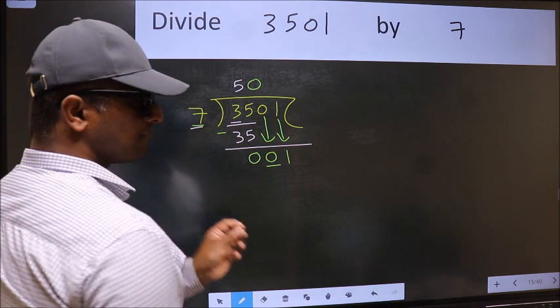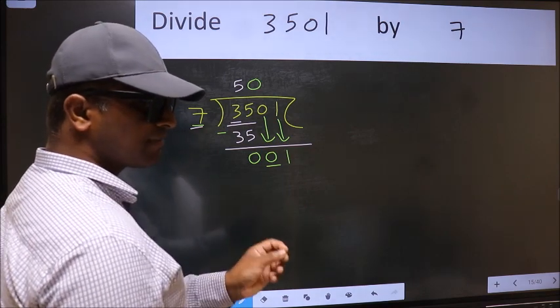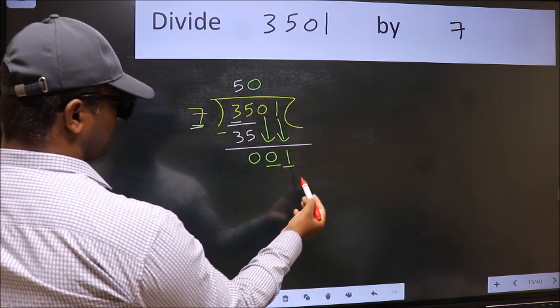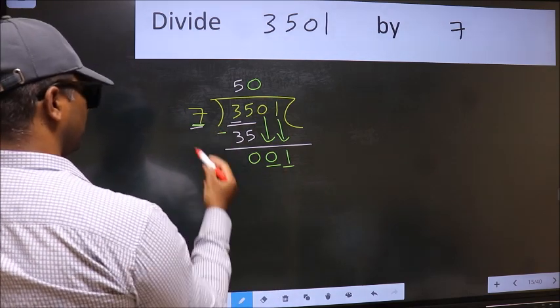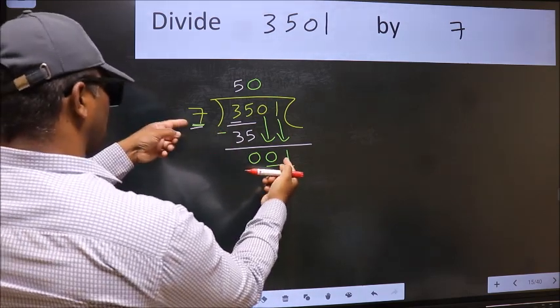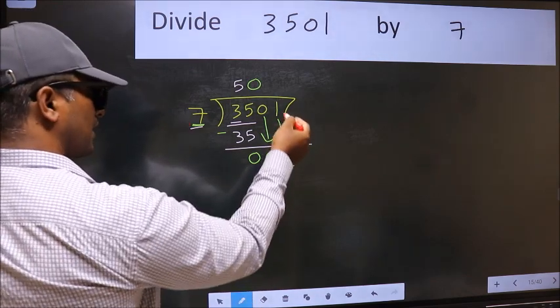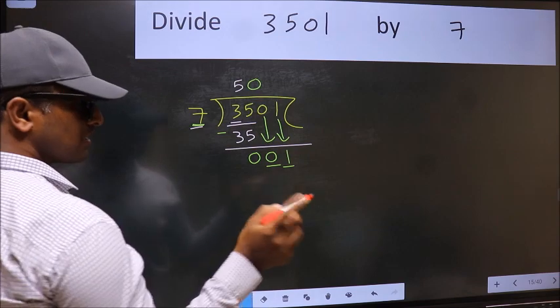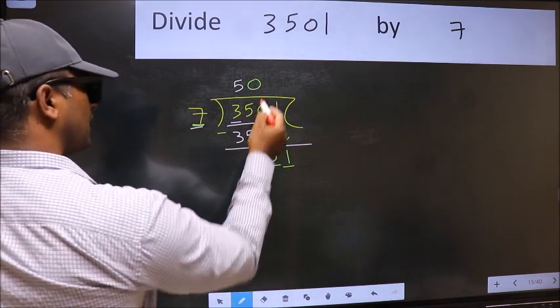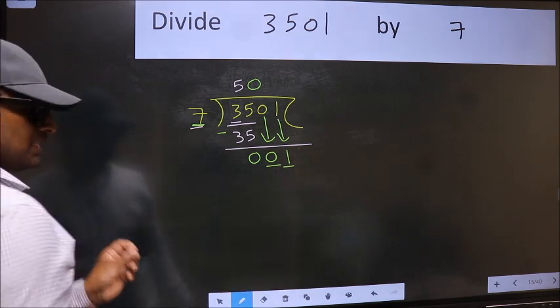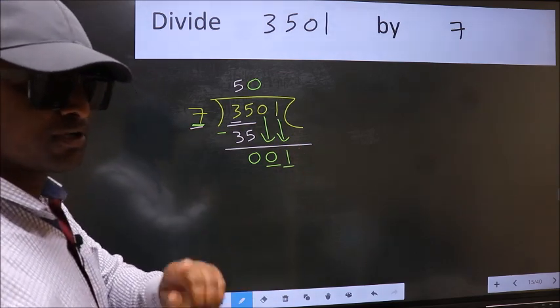After this step, the mistake happens. And the mistake is this. Here we have 1 and here 7. 1 is smaller than 7. And we don't have any more numbers to bring down. So what many do is they directly put dot, take 0. Which is wrong. Why is it wrong?